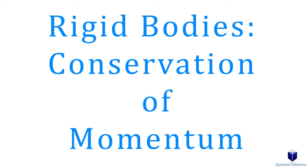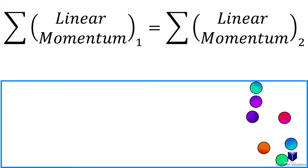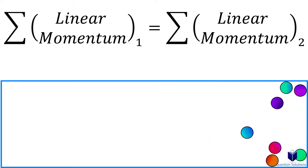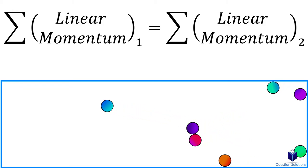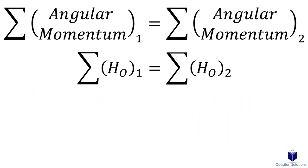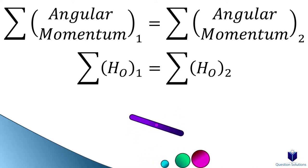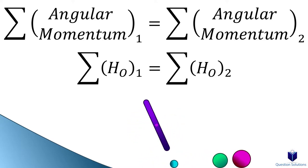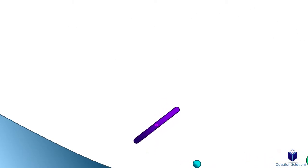Let's talk about rigid bodies and conservation of momentum. The initial linear momentum of an object equals the final linear momentum if the sum of all linear impulses acting on a system is zero in a specific direction. For angular momentum, the initial angular momentum equals the final angular momentum if all angular impulses about the center of mass or a fixed point are zero. This is easier to understand through examples, but first we need to discuss a few things to keep in mind.